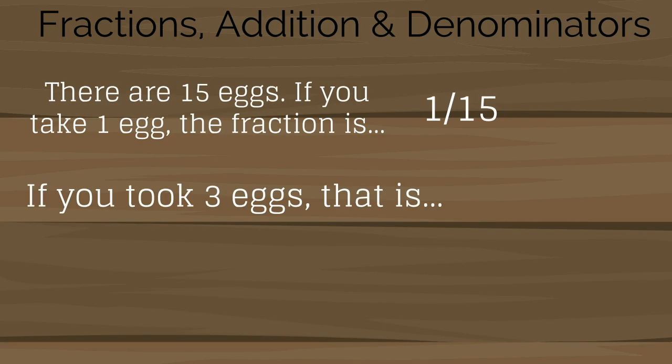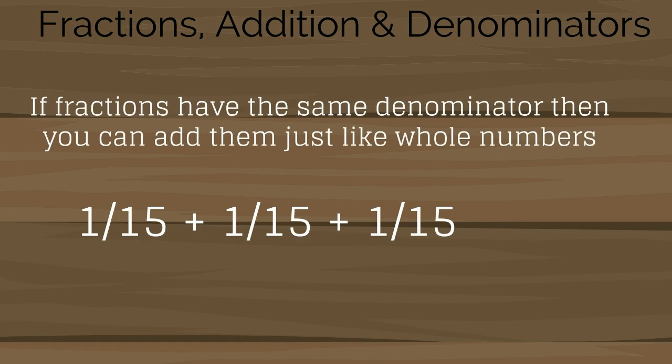If you took three eggs, that is 1/15 plus 1/15 plus 1/15. If fractions have the same denominator, then you can add them just like whole numbers. 1/15 plus 1/15 plus 1/15 equals 3/15.